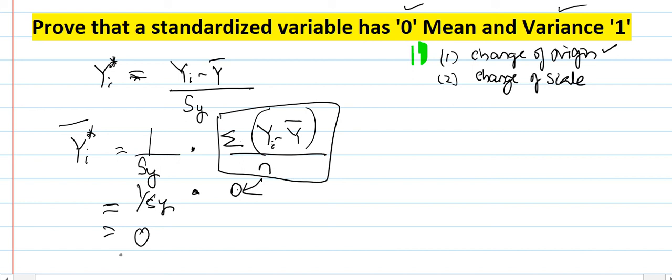So you are having standardized variable is having zero mean is first. Next, let's talk about the variance, how the variance will equal to one. So as you know, the standard deviation square, that is your variance.